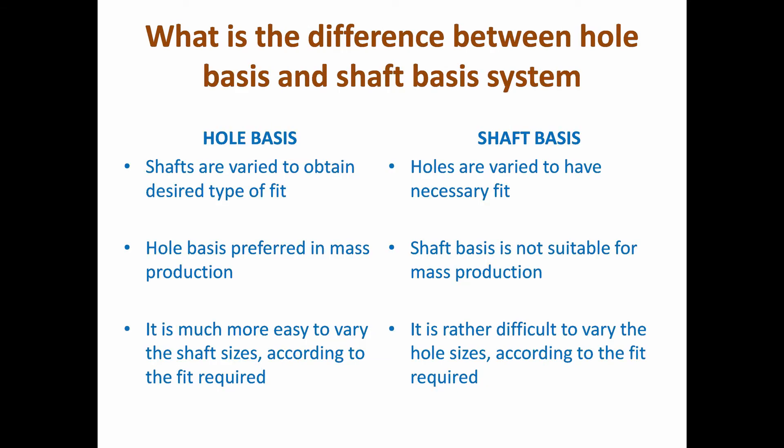What is the difference between hole basis and shaft basis systems? In the hole basis system, shafts are varied to obtain the desired type of fit. In the shaft basis system, holes are varied to achieve the necessary fit. Hole basis is preferred in mass production, whereas shaft basis is not suitable for mass production. It is much easier to vary the shaft size according to the fit required in the hole basis system.